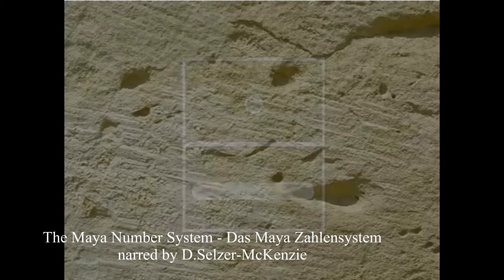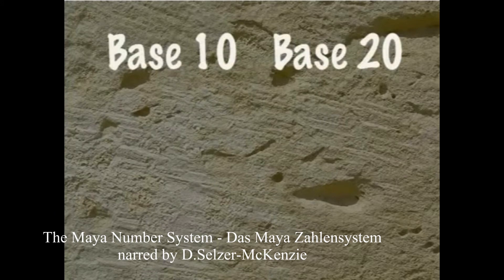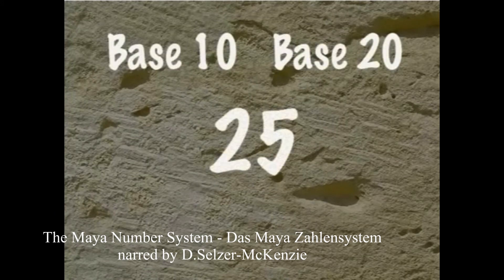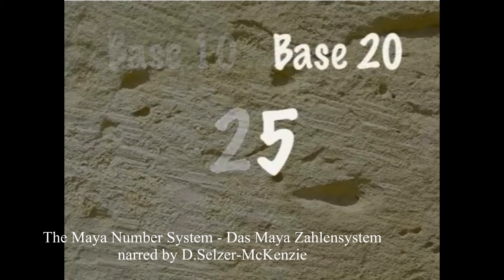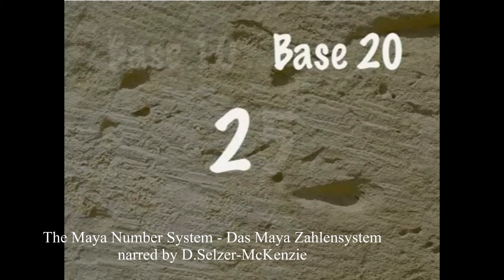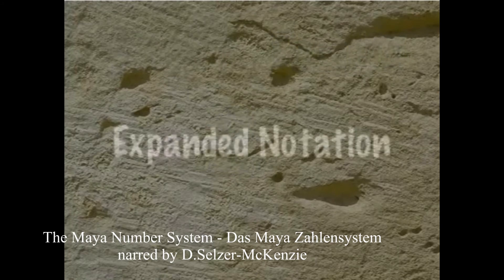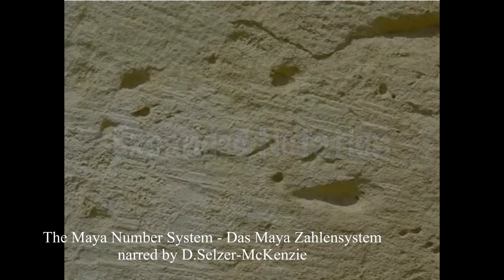But place value in a base 20 system has some interesting properties. Let's compare 25 in base 10 and 25 in base 20. In base 10, the 5 is in the 1's place and the 2 is in the 10's place. In base 20, the 5 is in the 1's place, but the 2 is in the 20's place. To see how this affects the value of the number, we'll need to see these numbers in expanded notation.